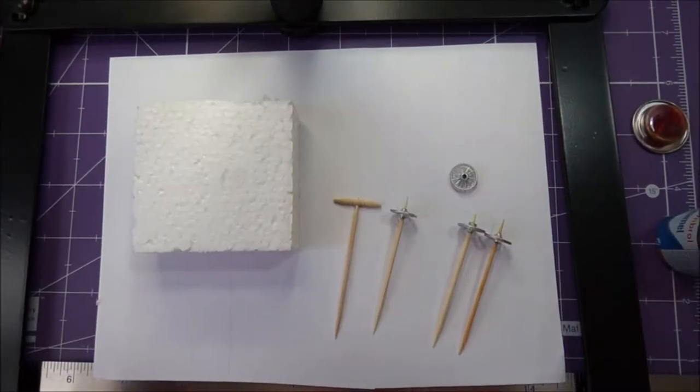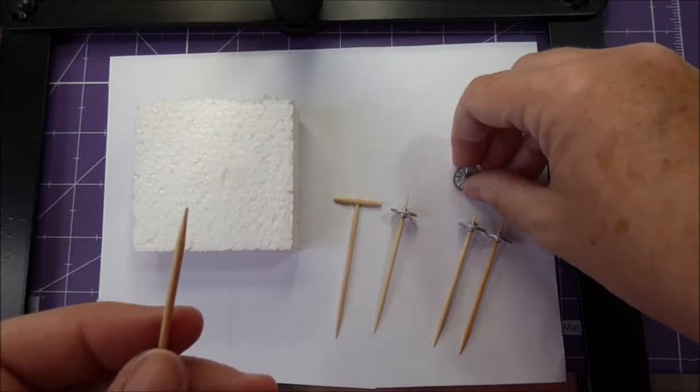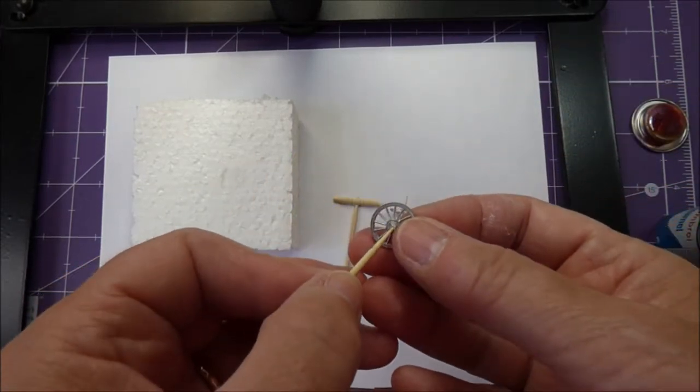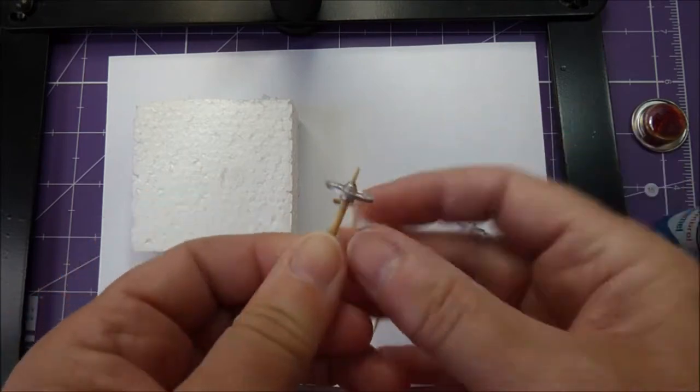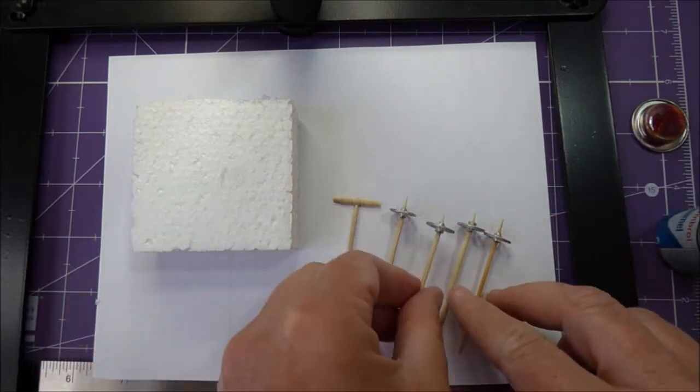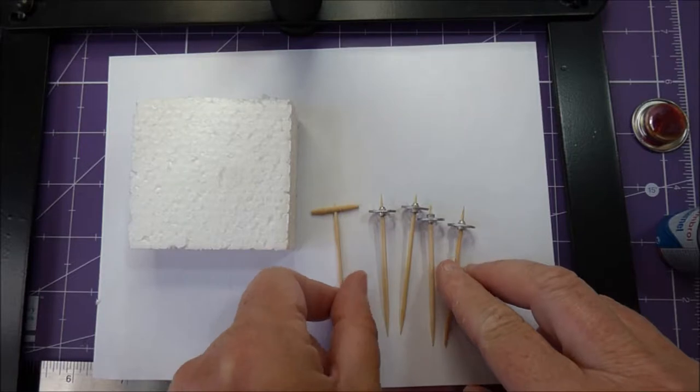For painting, push metal wheels onto the end of one of the cocktail sticks firmly. Do that with all the wheels and the wooden handle.